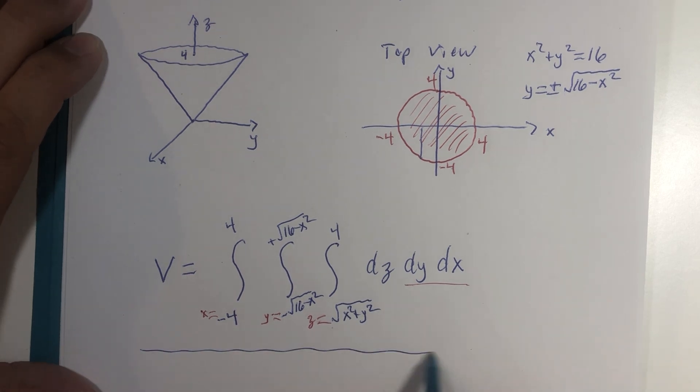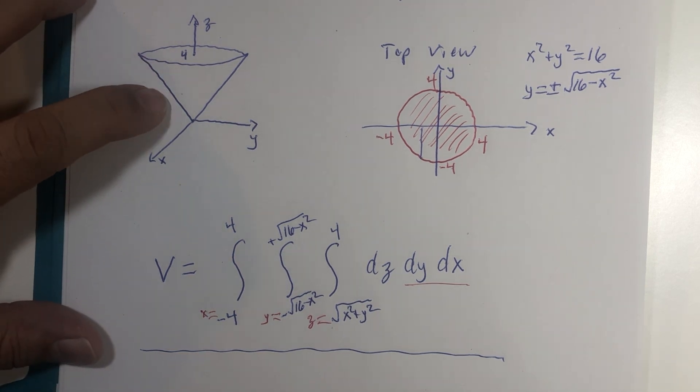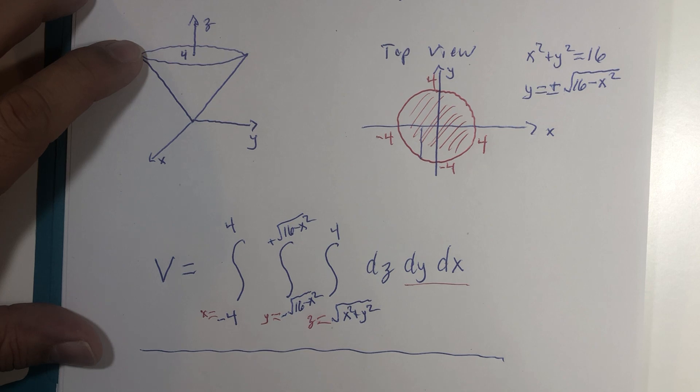There is our triple integral for volume of this solid region between the cone and the top boundary z equals four.